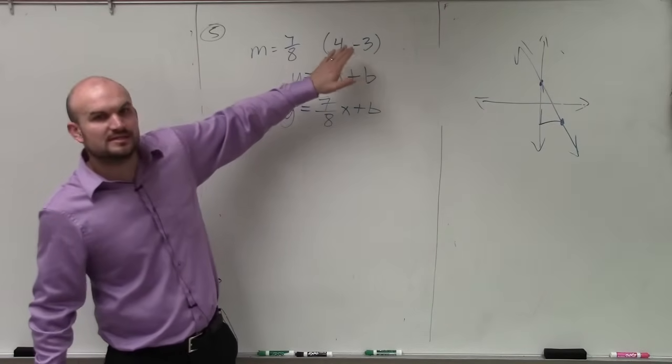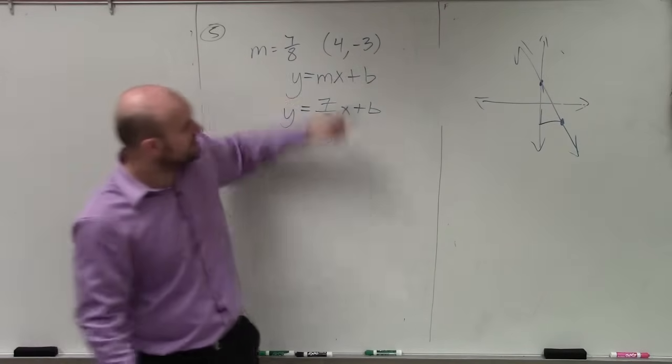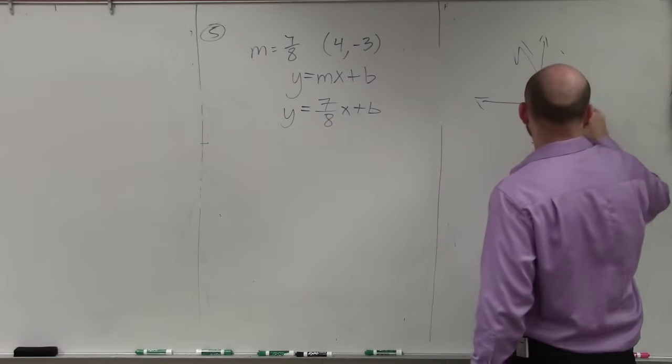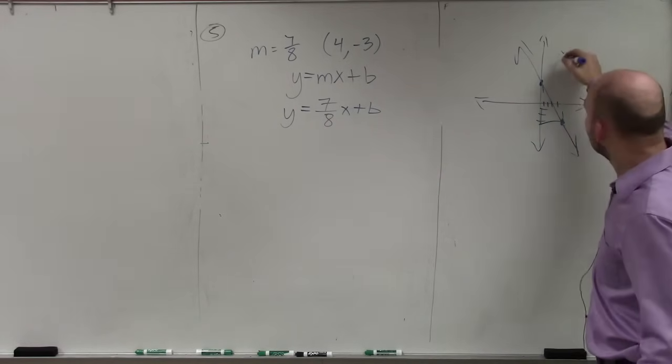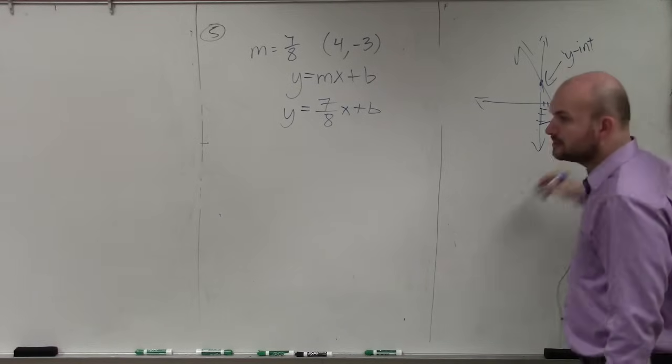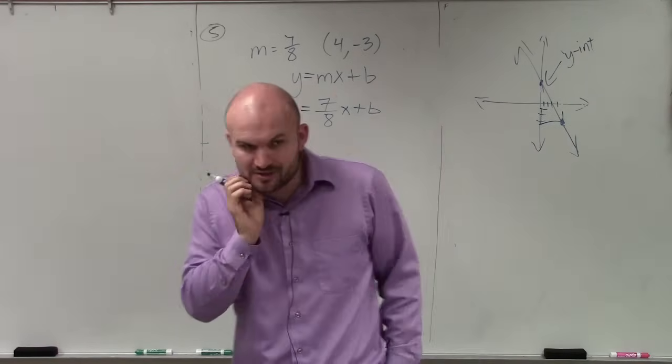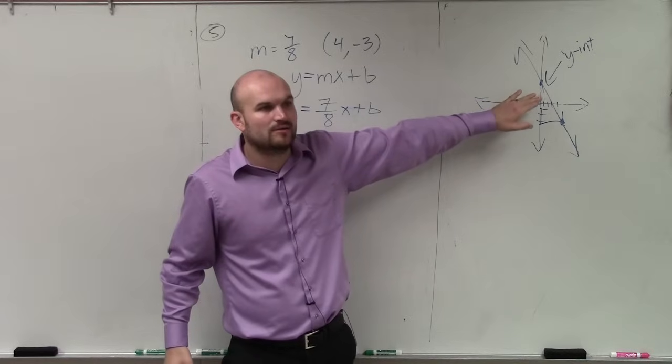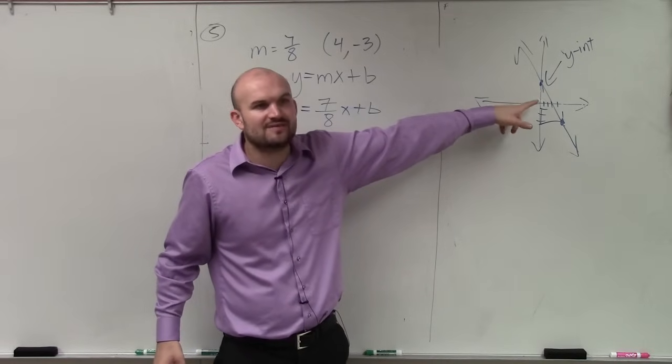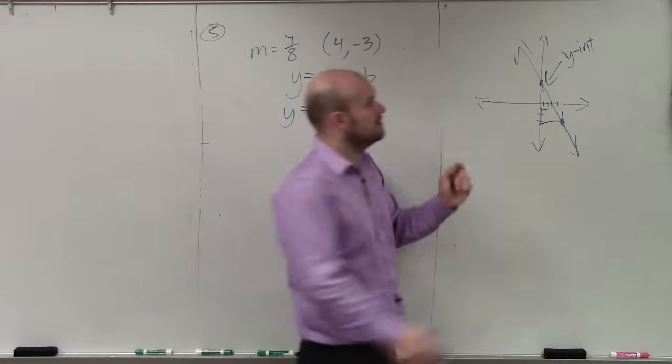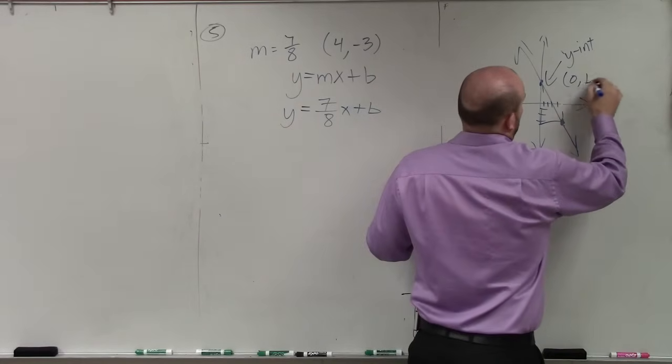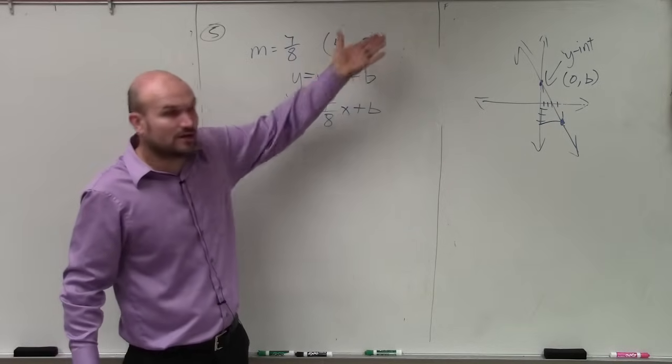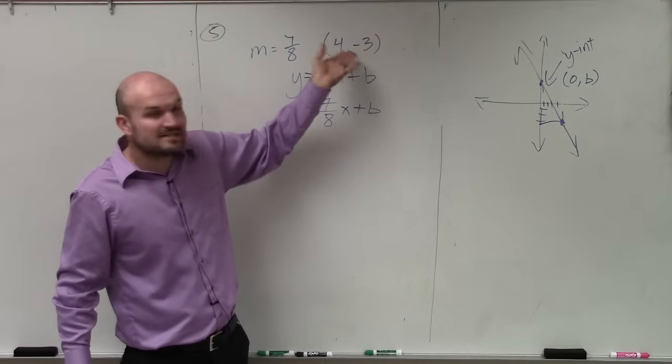And some students will make a mistake and say, well, isn't this the y-intercept? No, this point is 1, 2, 3, 4, negative 3. 1, 2, 3. This point is over here. The y-intercept is right here. So the important thing I want you guys to understand is what is the x value at the y-intercept? What is the x value at that point? Zero. So unless you have a point that's like 0 comma something, this is not the y-intercept.